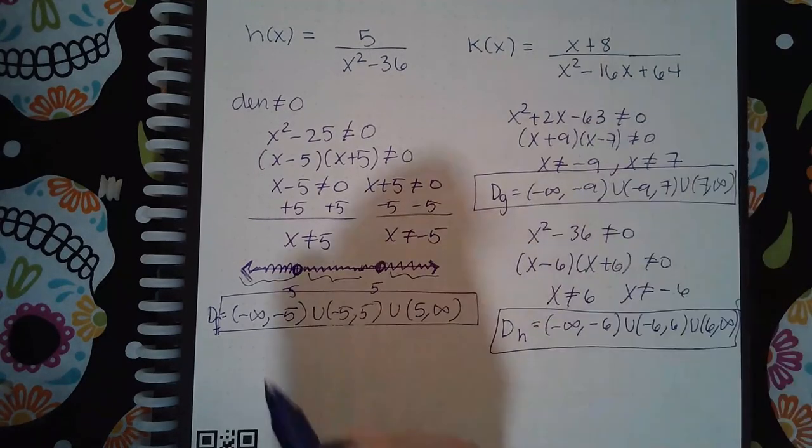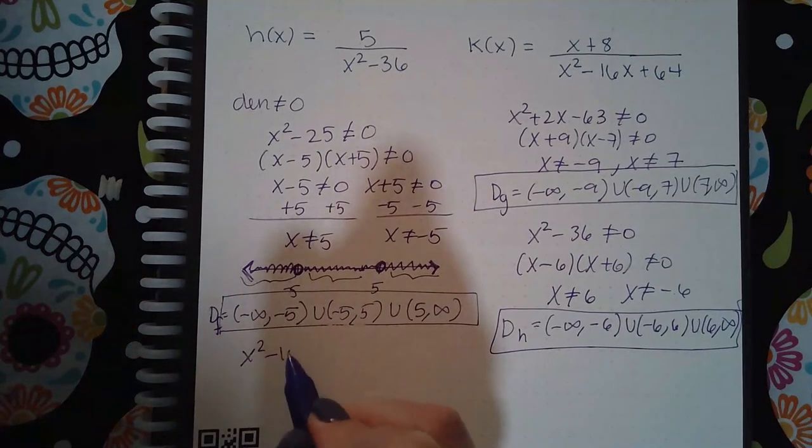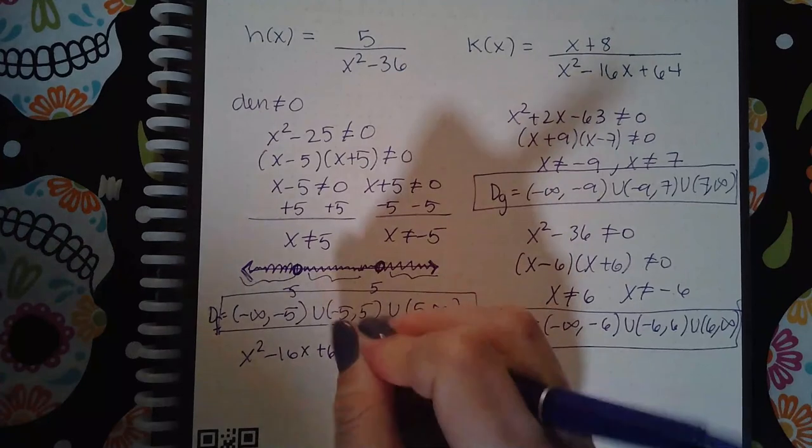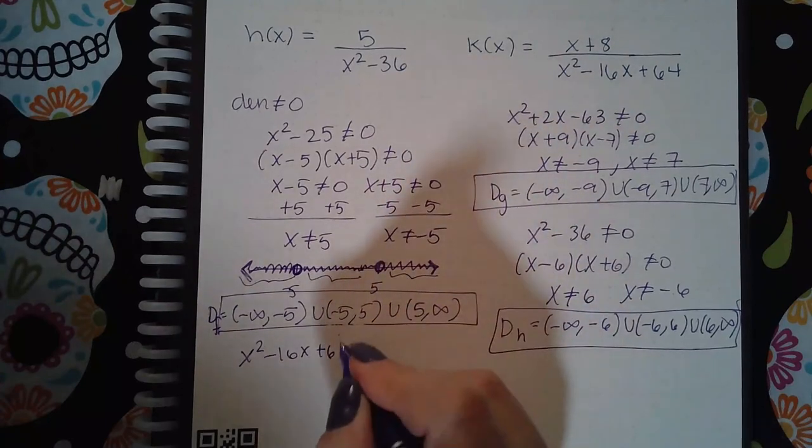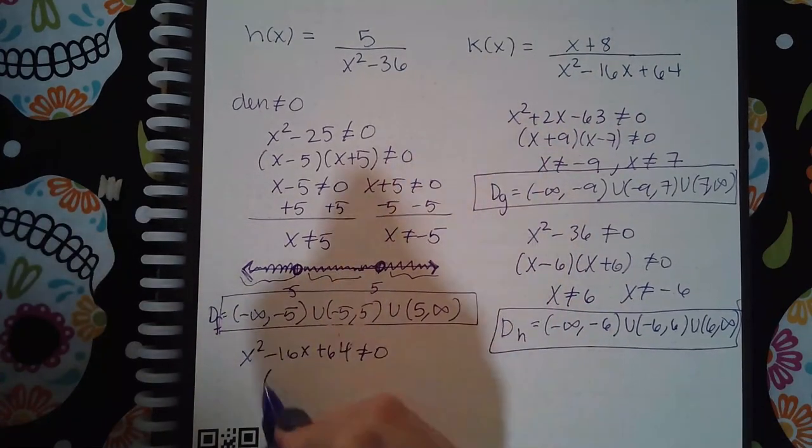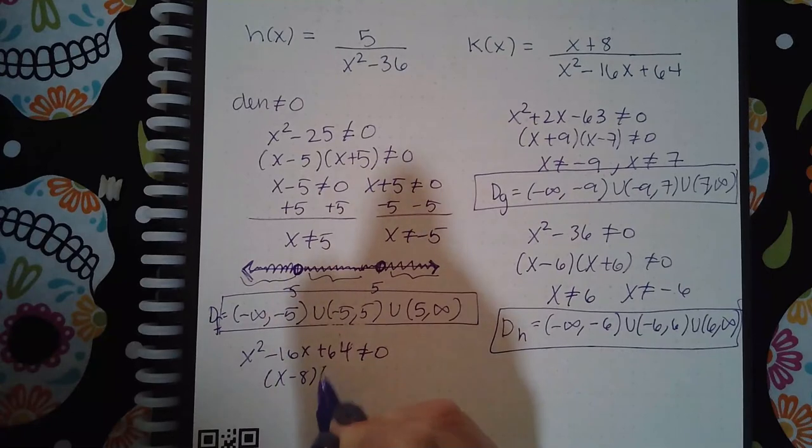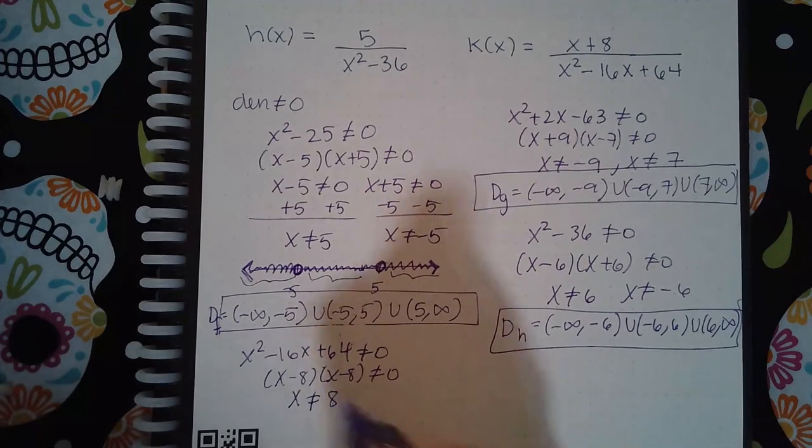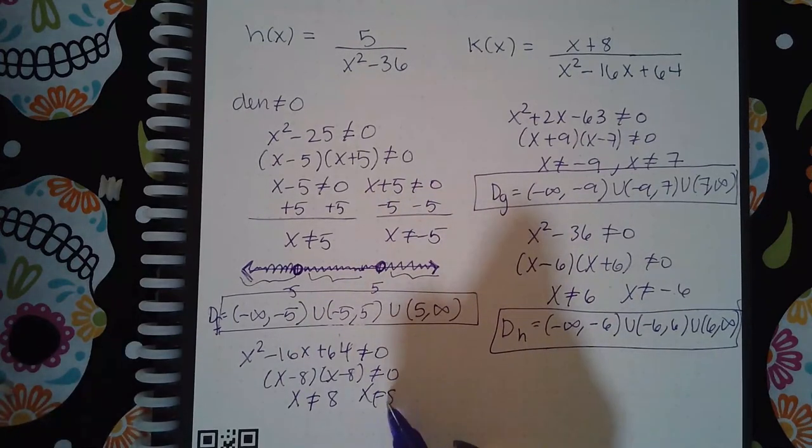Now for the last one, k, I'm going to say that that denominator cannot equal zero. So I get x minus eight, and x minus eight. So I get x cannot equal eight, and then x cannot equal eight again.